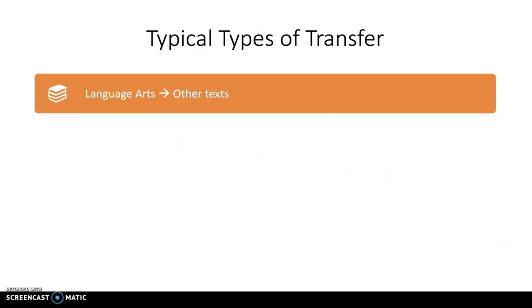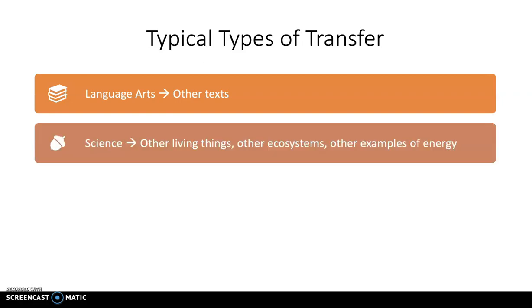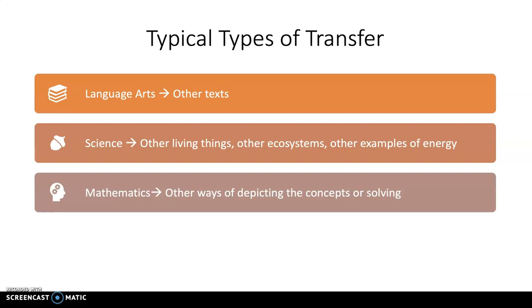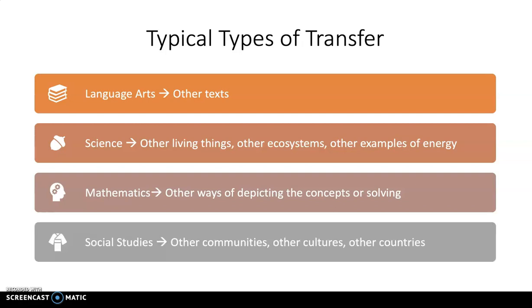Here are some typical types of transfer across disciplines. In language arts, it's simply other texts — a poem or another reading where those same concepts are present. For science, it might be other living things, other ecosystems, or other examples of energy. For mathematics, it's often other ways of depicting the concepts or other ways of solving what we're studying. For social studies, it's often other communities, other cultures, other countries. These are just examples to help you think about how to intentionally teach for transfer.